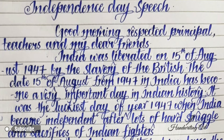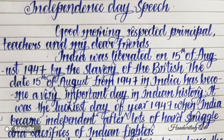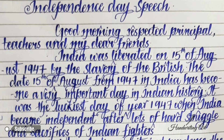India was liberated on 15th of August 1947 from the slavery of the British. The date 15th of August 1947 has become a very important day in Indian history. It was the luckiest day of year 1947 when India became independent after lots of hard struggle and sacrifices of Indian freedom fighters.